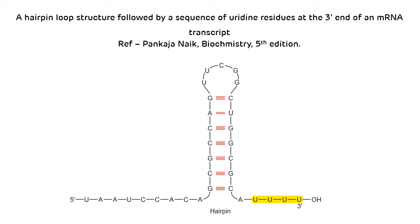That covers transcription in prokaryotes. It is divided into three main phases: initiation, elongation, and termination. The enzyme responsible for transcription in prokaryotes is the RNA polymerase enzyme, which contains 6 subunits and is also called the holoenzyme. Now we will see the multiple choice questions asked from this topic.